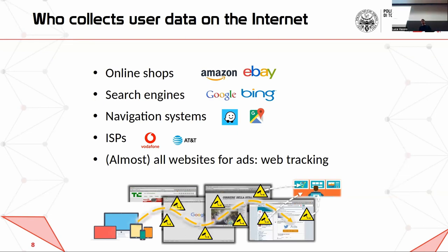Who is collecting this data on the internet? We have all kinds of entities collecting data about users — from online shops to search engines, navigation systems, but also internet service providers. Even who is providing you access to the internet knows which websites you are visiting, and maybe knows even more about you, because you're paying them — they have your credit card number, your address, etc. And finally, basically almost every website does tracking. Even though tracking is starting to be banned from different browsers, there's still tracking for advertisement.